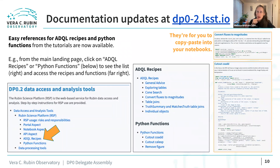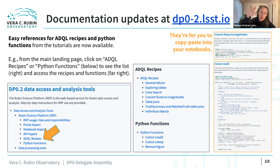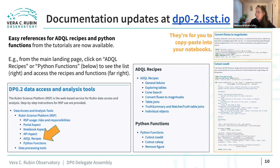Another new thing is easy references for ADQL — what we call ADQL recipes — very common queries that you can copy, paste, and update for your own use. Also some Python functions used in the notebooks, like making a cutout of a coadd. We've made these right in the documentation now. These copy-pasteable ADQL queries include things like one that converts fluxes to magnitudes, and also ones for making cutout coadds. You'll find all of this from the main page dp0-2.lsst.io under data access and analysis tools.